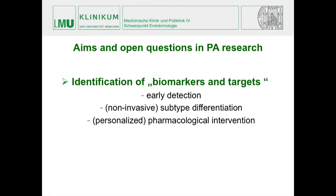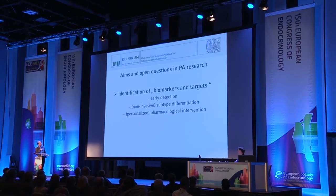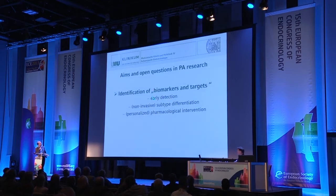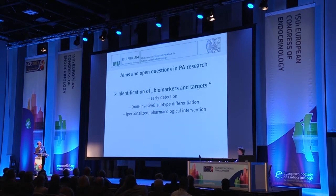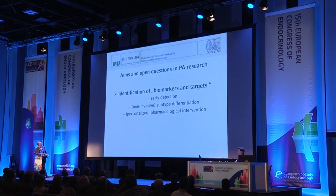Now coming to open questions and aims, let me boil this down to one line: the identification of biomarkers and targets. If you had biomarkers, you would be able to early detect patients with primary aldosteronism and — maybe even more importantly — have a noninvasive way for subtype differentiation of unilateral versus bilateral disease, avoiding invasive catheterization. And if you had targets, it would be possible to have some personalized pharmacological intervention.